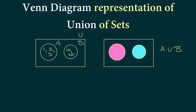So A union B contains all elements of A — that's 1, 2, 3 — and all elements of B — that's 10 and 20. Both circles are fully colored.